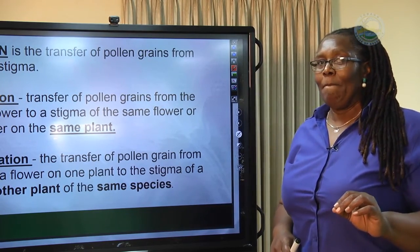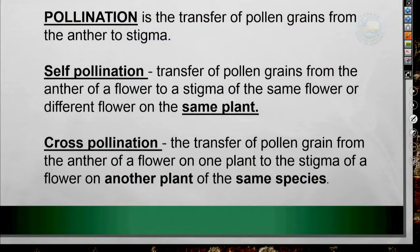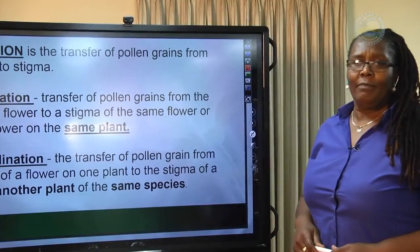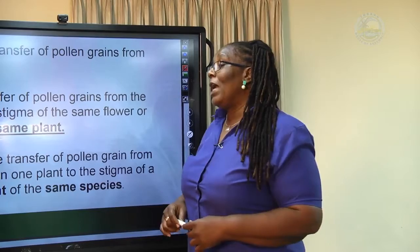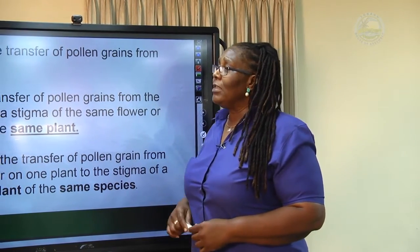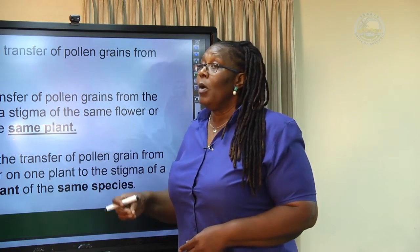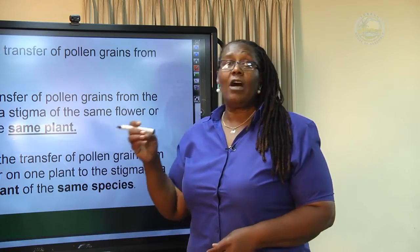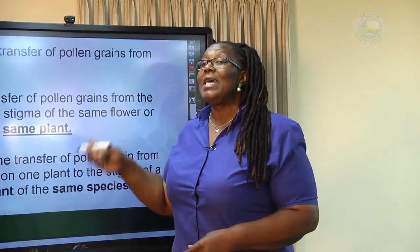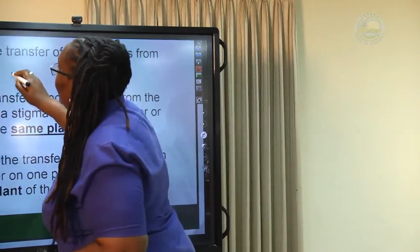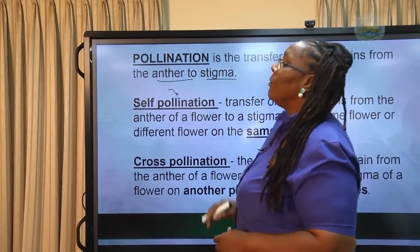Remember what the objectives are. Pollination is the transfer of pollen grains from the anther to the stigma of a plant of the same species. Whether self or cross-pollination, it involves the transfer of pollen grains from the anther to the stigma of a plant of the same species.